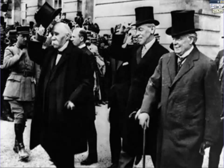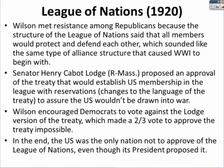This is Woodrow Wilson here with other European leaders as they negotiate the Treaty of Versailles. The League of Nations is developed throughout 1919 and 1920. Wilson meets major resistance among the Republicans back at home because the structure of the League of Nations said that all members would protect and defend each other — and that sounded a lot like the alliance structure that had caused World War I to erupt to begin with.